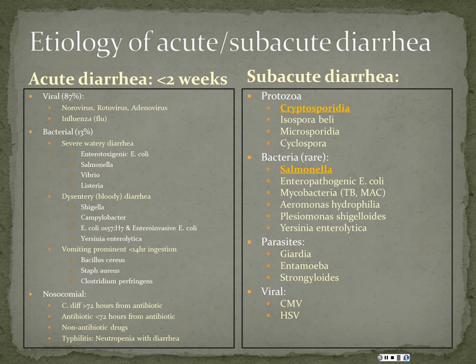Viral causes in subacute diarrhea are almost exclusively in patients with severe immunosuppressed states — people on chemotherapy, transplant patients, patients with HIV. So in general, you won't have to worry about CMV and HSV in most patients.